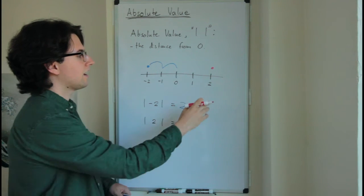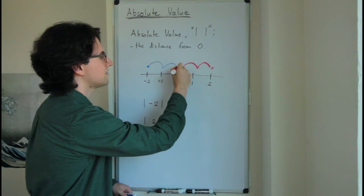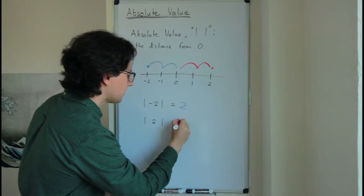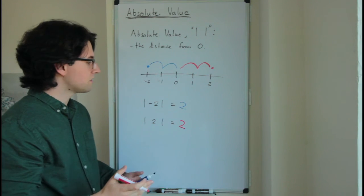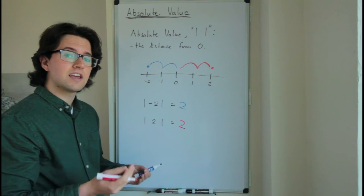Now let's take a look at positive two. Now if I travel two spaces to the left, well, I get to zero as well. So I get two for the absolute value of positive two, which shows me that the absolute value of a positive and negative number are the same.